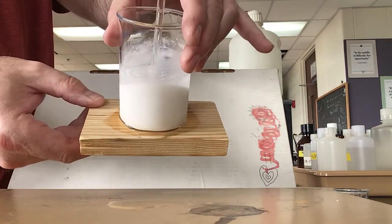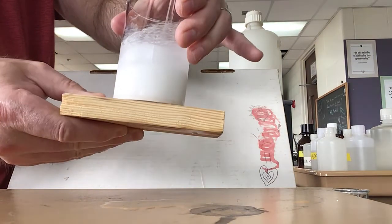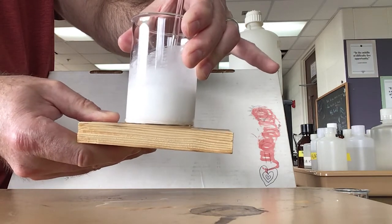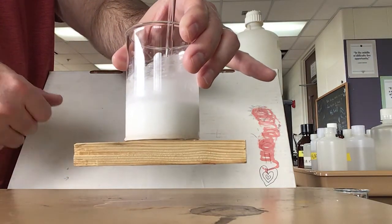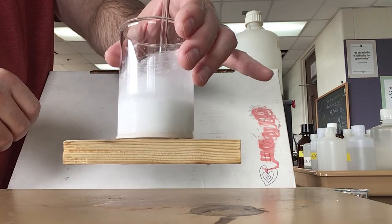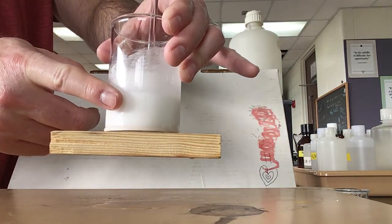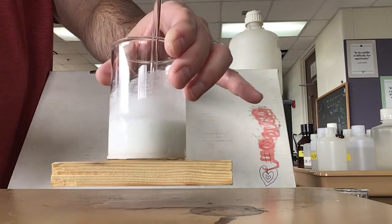Even if we pour off some of the water, this is still really frozen. I'm not able to pull this apart. I'm actually kind of worried about breaking the beaker. So I'm going to let everything warm up to room temperature, but that's our demo that has to do with an endothermic process and getting us thinking about heat flow.